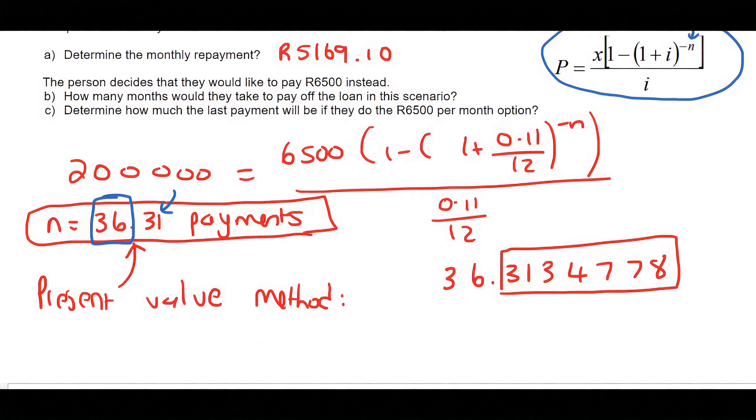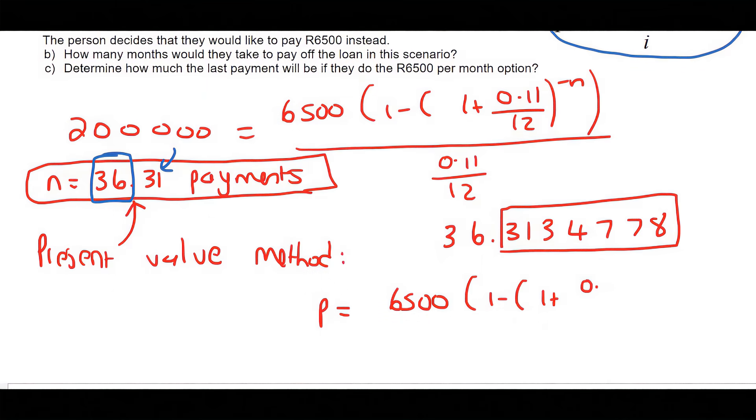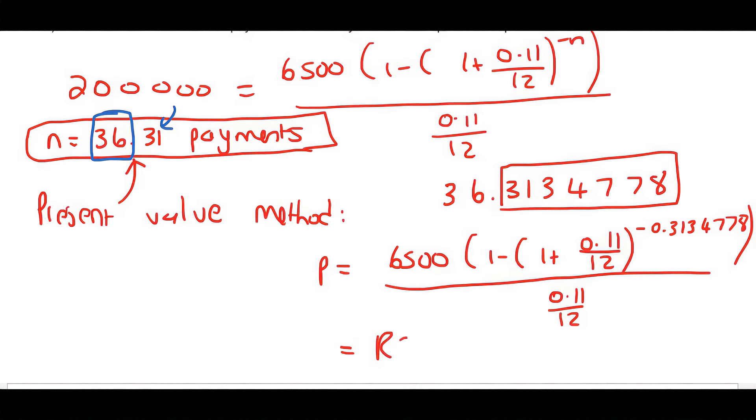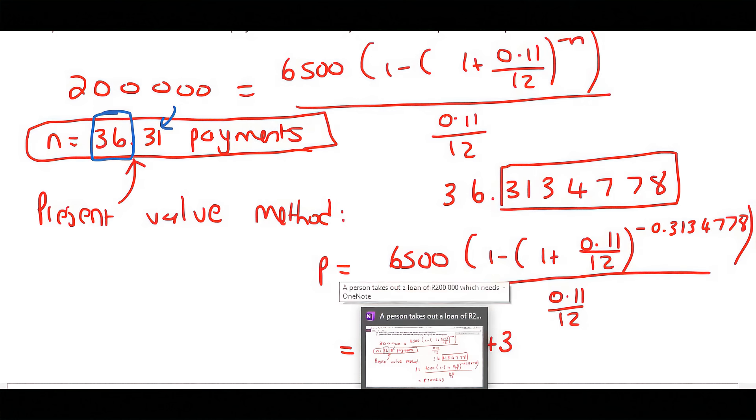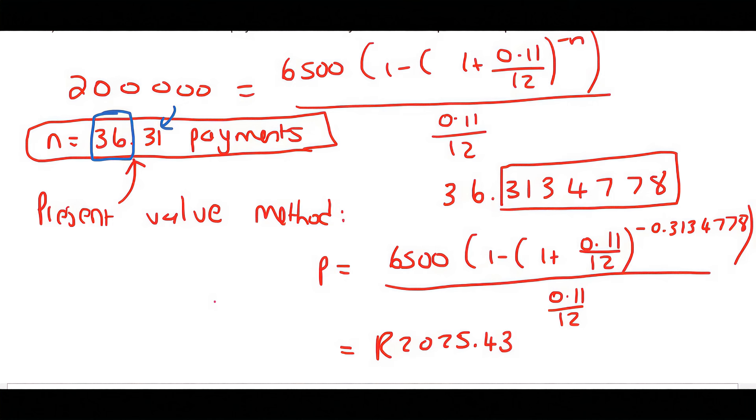So let's do that. We know the monthly payment is 6,500, 1 minus 1 plus 0.11 over 12 to the negative 0.3134778—you don't want to round that part off—over 0.11 over 12. If you work this out, you get 2,025 Rand and 43 cents. It makes sense that it's less than 6,500 because we're only paying a small portion of the 6,500. Pay careful attention: when is this the present value? That would be the amount you still owe immediately after you have made your 36th payment.